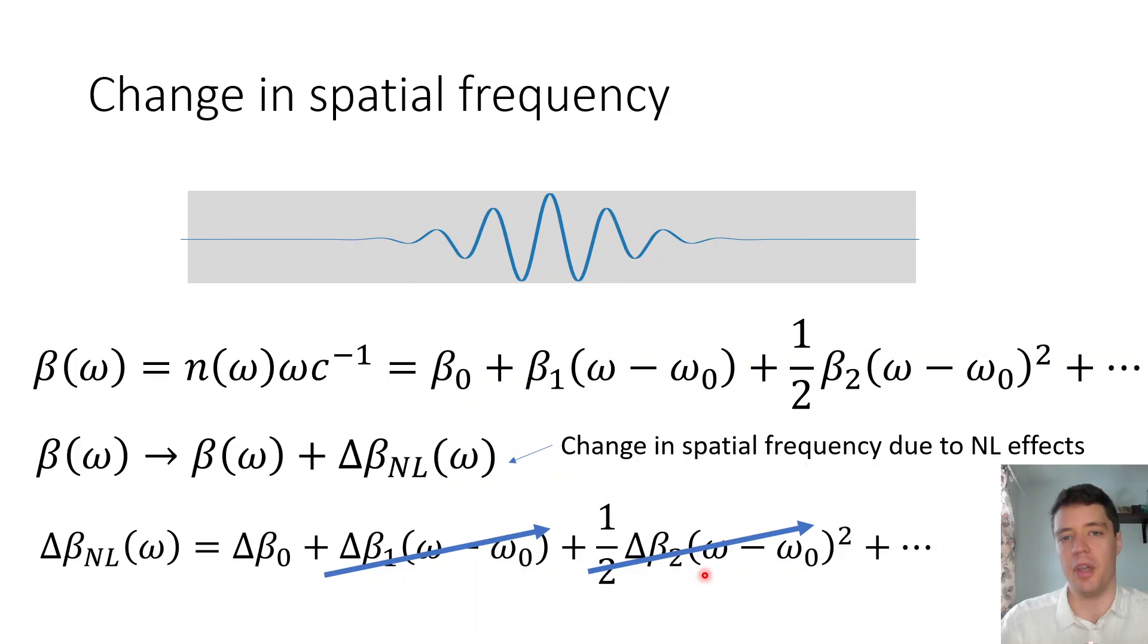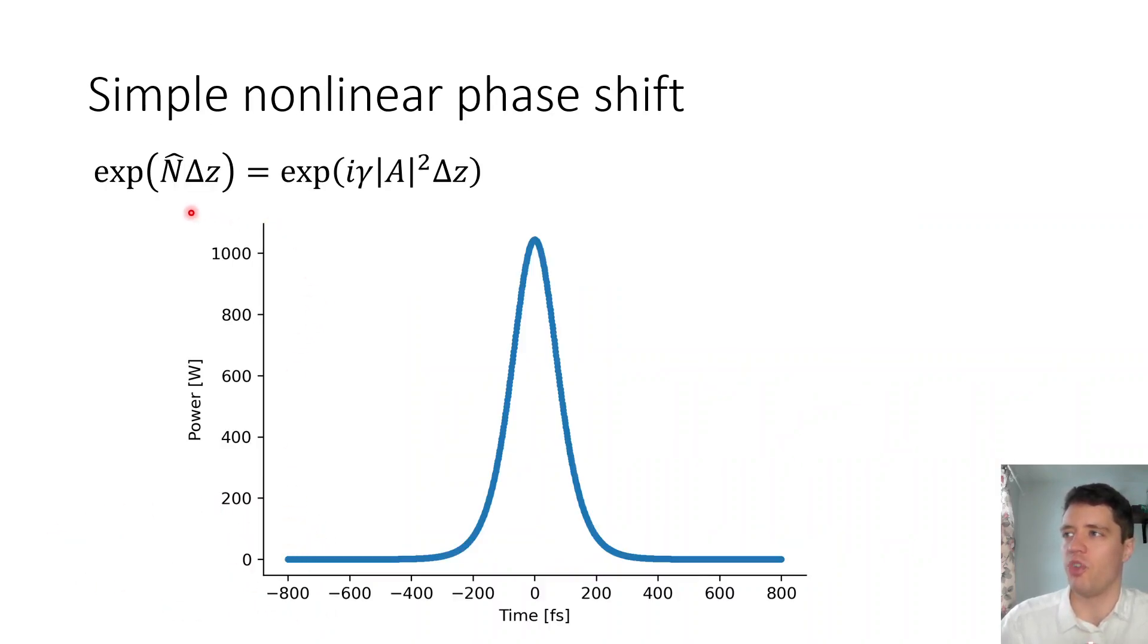In my first video on non-linear fiber optics and the split-step Fourier method applied to the non-linear Schrödinger equation, it was essentially, under the hood, assumed that only the first-order contribution to this spatial frequency change was present. In other words, this delta beta 0. And essentially that resulted in the following expression for the phase shift experienced in the time domain when we're propagating through a non-linear fiber. So in other words, the idea here is that the local phase shift of this pulse is proportional to the local power.